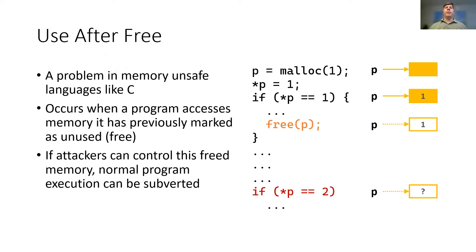Use-after-free is a common type of memory safety error. It is the result of erroneously accessing memory previously freed by the program. If the freed memory can be filled with attacker-controlled values when reallocated, normal program execution can be subverted. In this code fragment, pointer P is dereferenced even though it was already freed. We refer to P as a dangling pointer.